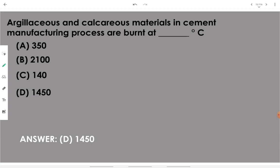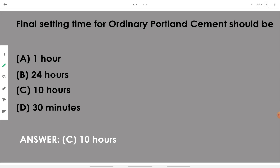Argillaceous and calcareous materials in the cement manufacturing process are burnt at 1450 degrees Celsius. Argillaceous means the majority content is clay, and calcareous means the majority content is calcium. Remember: 1450 degrees Celsius. Then, the final setting time for ordinary Portland cement should be 600 minutes or 10 hours.